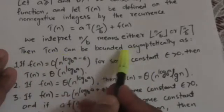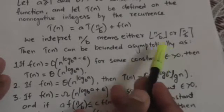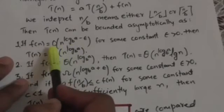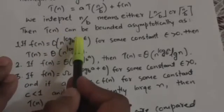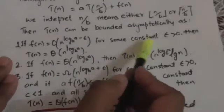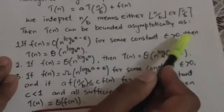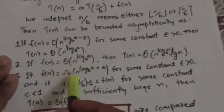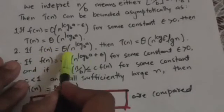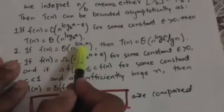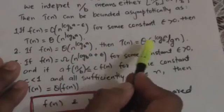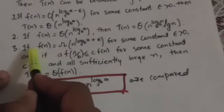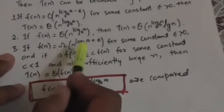T(n) can be bounded asymptotically by any of the three cases of master theorem. The first case is: if f(n) = O(n^(log_b(a) − ε)) where ε is a constant greater than 0, then T(n) = Θ(n^(log_b(a))). The second case is: if f(n) = Θ(n^(log_b(a)) · lg n).